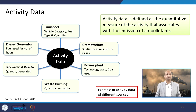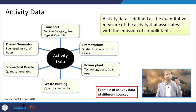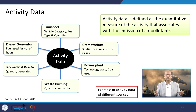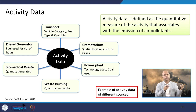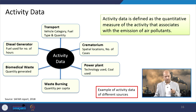Activity data categories include transport — vehicle categories, fuel types, and quantities. Power plants — what technology is used, whether gas-based or coal-based. Waste burning — quantity per capita, varying by city and socioeconomic class since different amounts and types of waste are generated. Then biomedical waste from hospitals and labs, and diesel generators. This is just a representative list of activities — you can add whatever activity you want, and the activity data can be extended accordingly.